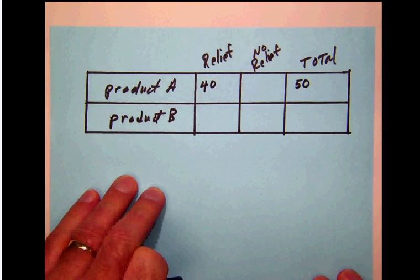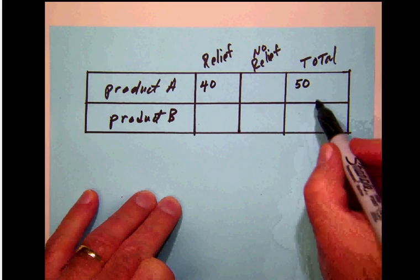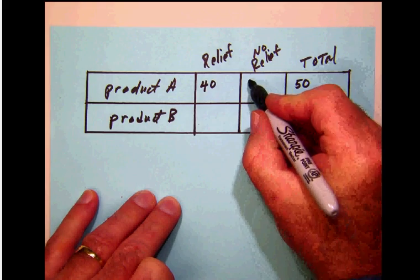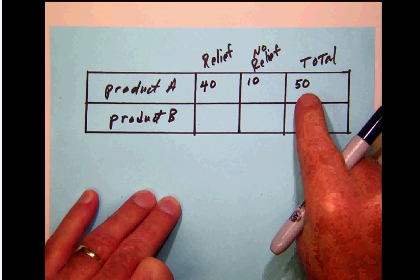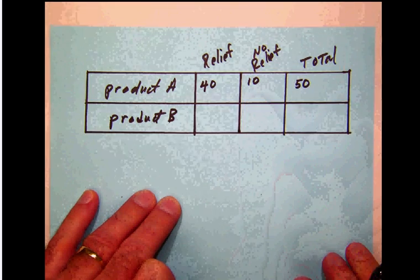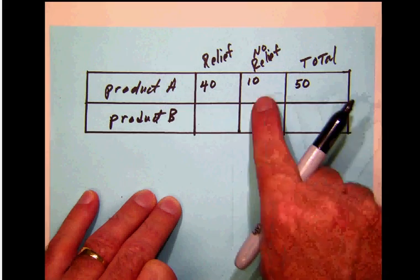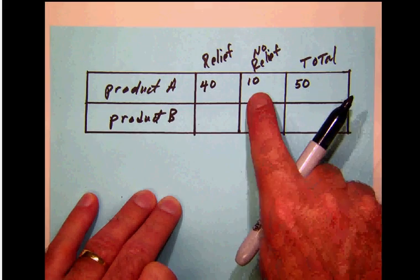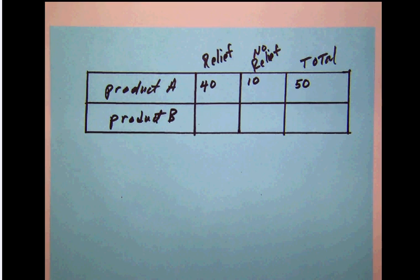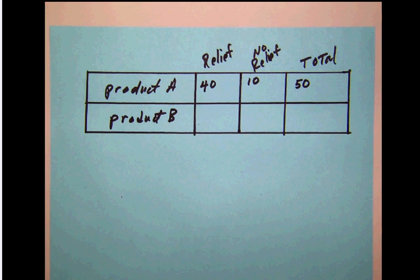Keep in mind that 10 of them—that would be 50 minus 40—did not get relief, and so we will have to look at that. Now read carefully, because sometimes they will give us this information in different ways, so we have to be sensitive to that. Read the problem carefully and then code things in.